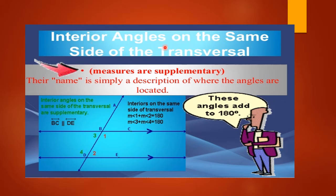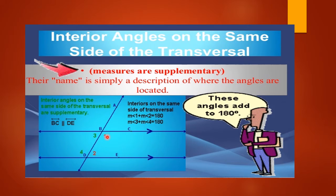Then we have interior angles on the same side of the transversal. Interior means inside, and same side of the transversal — their measures are supplementary. Their name is simply a description of where the angles are located: interior means inside and on the same side of the transversal. So their total will be 180 degrees. For example, the measurement of angle one plus the measurement of angle two will total 180, because according to that property, interiors on the same side of a transversal sum to 180.